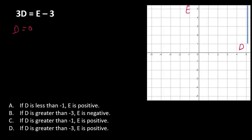One will be d equals 0, and the second will be e equals 0. If d equals 0, then 3 times 0 equals e minus 3, then 0 equals e minus 3, and e equals 3. So we have d equals 0 and e equals 3. This is the first point.